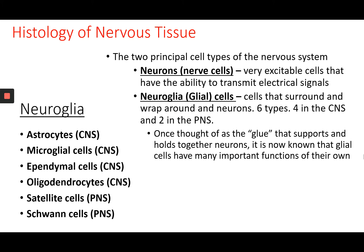Next we'll look at the microscopic anatomy of the nervous system, starting with histology of nervous tissue. First we'll look at neuroglia, which used to just be called 'the glue' — thought to only support neurons, which are the structural and functional units of nervous tissue. There are two principal cell types: neurons and neuroglia. But now we know neuroglia have much more complicated roles than just being extracellular matrix. The six neuroglia cell types are: astrocytes, microglial cells, ependymal cells, oligodendrocytes, satellite cells, and Schwann cells.